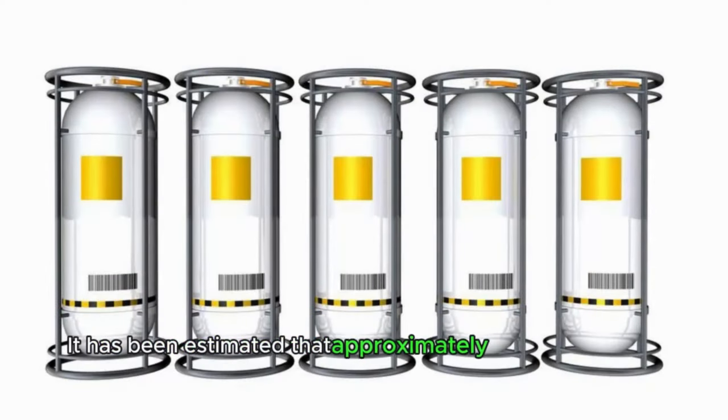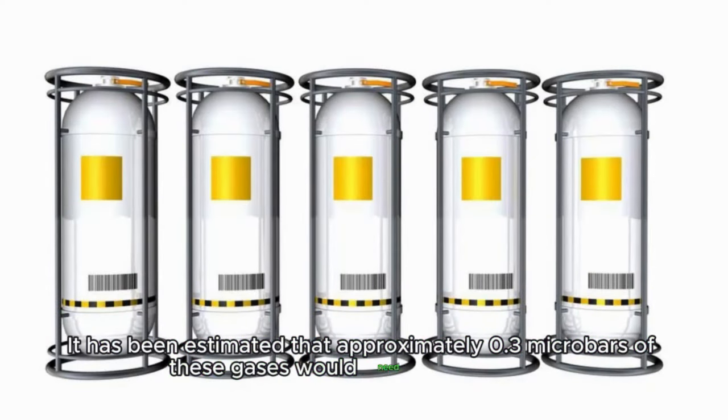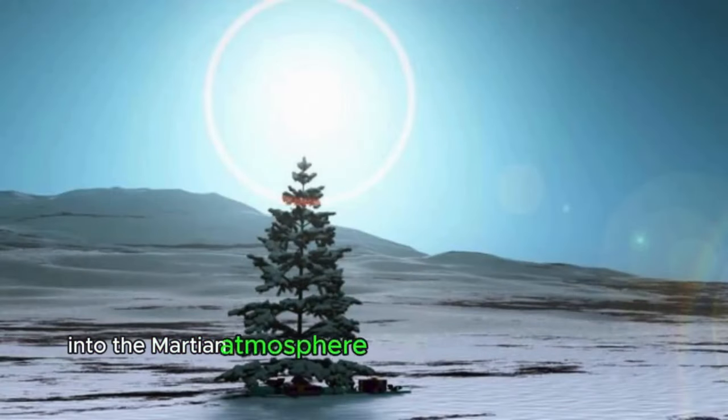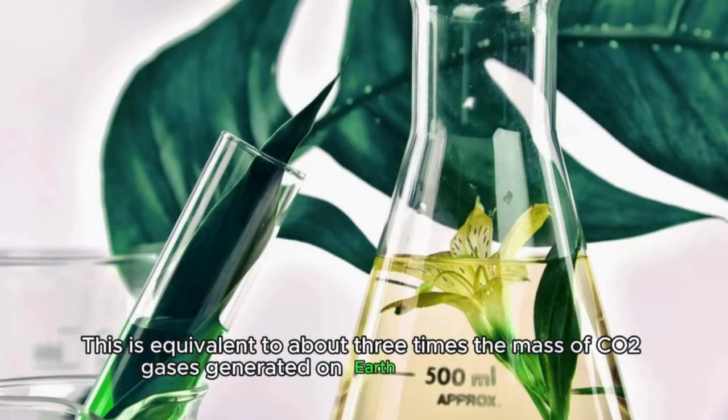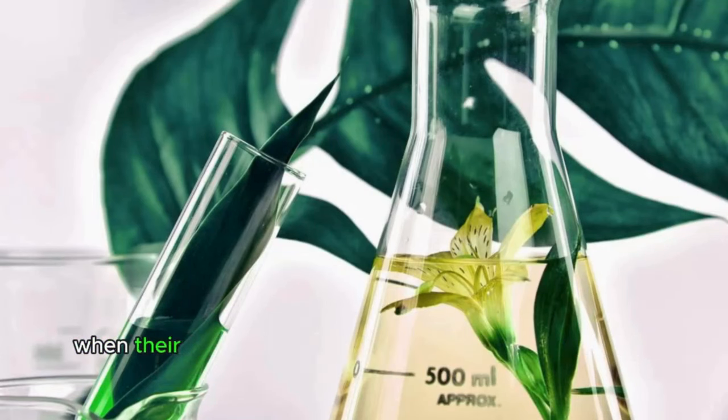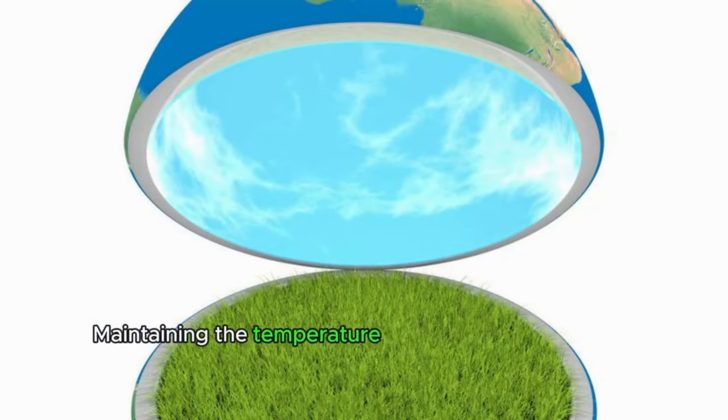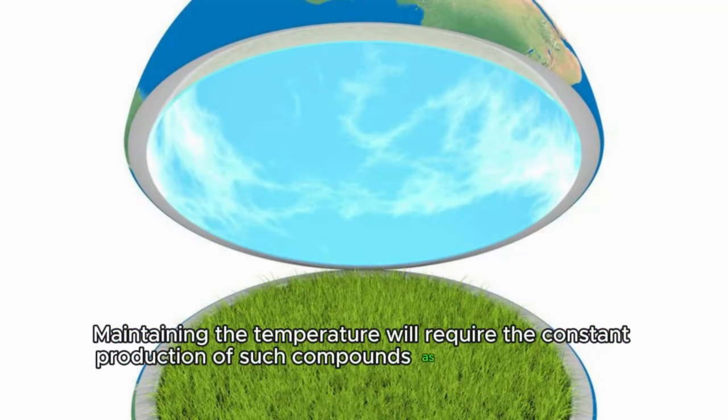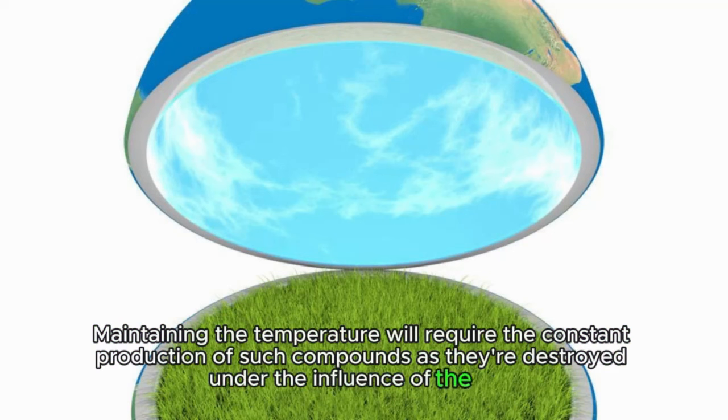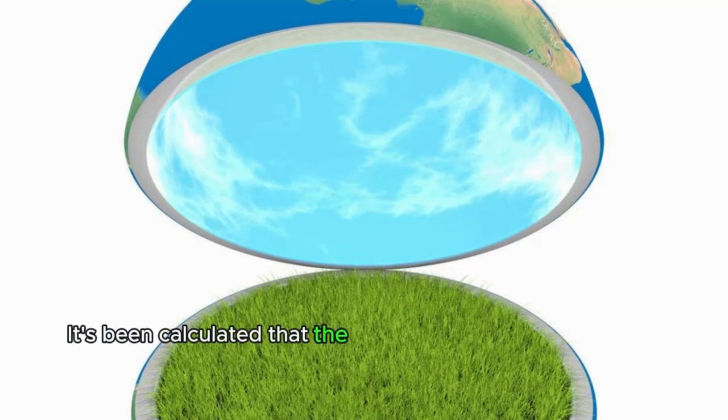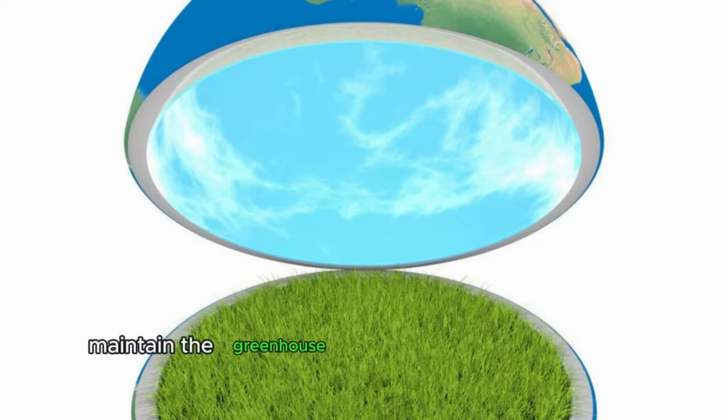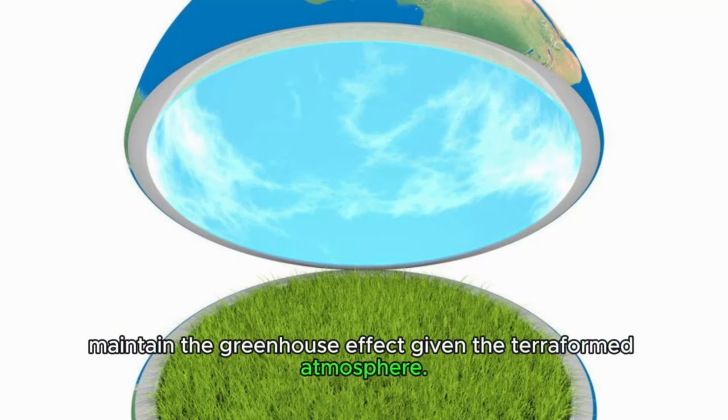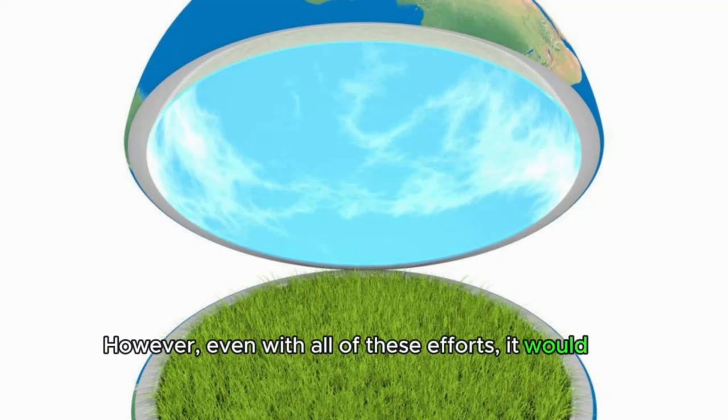It has been estimated that approximately 0.3 microbars of these gases would need to be injected into the Martian atmosphere to melt the CO2-laden south polar glaciers. This is equivalent to about three times the mass of CO2 gases generated on Earth from 1972 to 1992, when their production was prohibited by an international treaty. Maintaining the temperature will require the constant production of such compounds as they're destroyed under the influence of the sun. It's been calculated that the introduction of 170 kilotons of optimal greenhouse compounds annually would be sufficient to maintain the greenhouse effect given the terraformed atmosphere. However, even with all of these efforts, it would be difficult to preserve the...